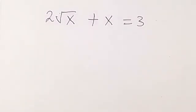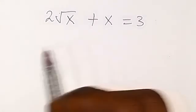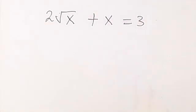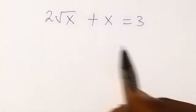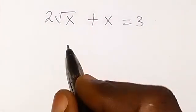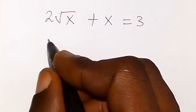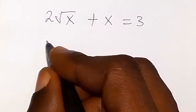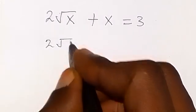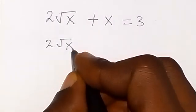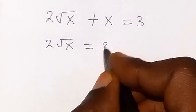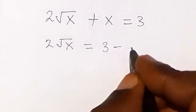First, we want to solve this problem on radical equation and find the value of x. Let's take x to the other side of this equation, so this will become 2√x equals to 3 minus x.